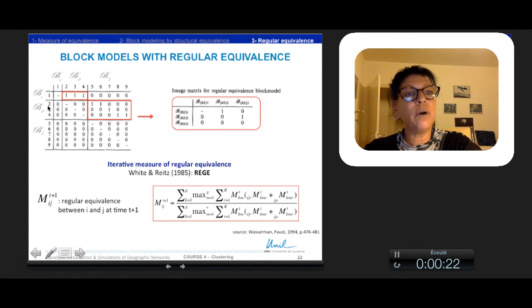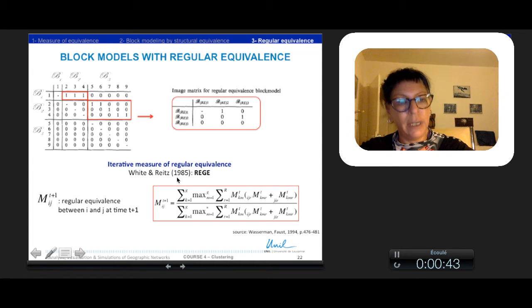It is the case for b2 to b3 here. To measure regular equivalence, White and Reitz proposed the REGE algorithm, which is an iterative procedure estimating the degree of regular equivalence between pairs of actors i and j.